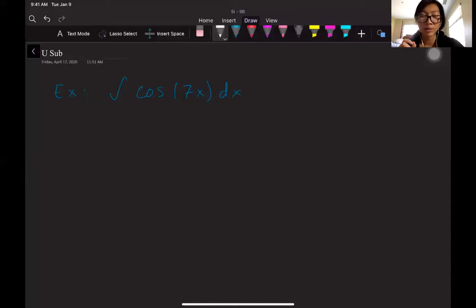I notice cosine first because that's something I recognize. I know how to take an integral of cosine of x. The second thing that I recognize is I don't actually know how to take the integral of cosine of 7x. I only know how to take the integral of cosine of x. This is how I identify my